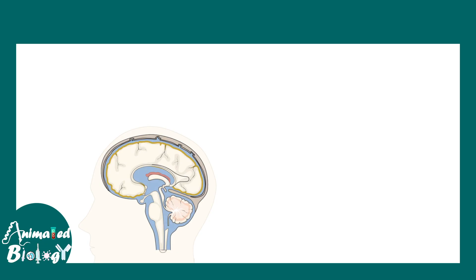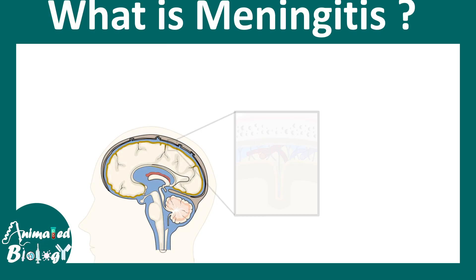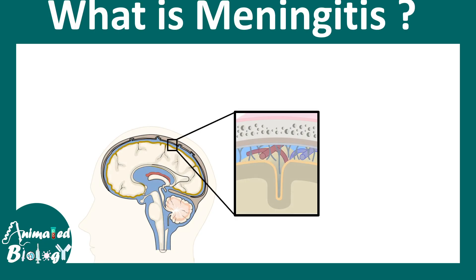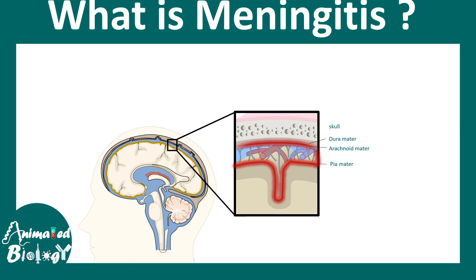What is meningitis? Meningitis simply means the inflammation of the meninges. Here is the skull just for your orientation. Underneath that there would be dura mater, arachnoid mater, and pia mater, which are different parts of the meninges, and the overall inflammation of the meninges is known as meningitis.